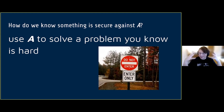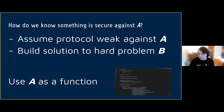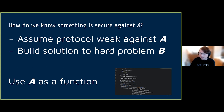Another way of phrasing this is that we assume our communication protocol or encryption scheme is weak against the adversary, and then assuming that weakness, we are able to build a solution to a hard problem B. The simplest hard problem I'll give you as an example is determining the factors of really, really big numbers. If I give you a really big number and ask you to pull out a specific prime factor — a number that divides that number — this is a problem that is in theory hard to solve, at least on a normal computer. By hard here, I just mean it takes a long time.